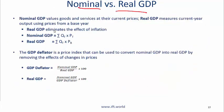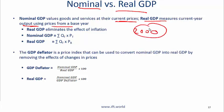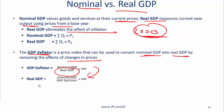Nominal versus real GDP: Nominal GDP values goods and services at their current prices. Real GDP measures current year output using prices from a base year — so if the base year is 2000, real GDP is based on 2000 prices — eliminating the effect of inflation. The GDP deflator is a price index used to convert nominal GDP into real GDP by removing the effects of price changes. The GDP deflator equals nominal GDP divided by real GDP multiplied by 100, and real GDP equals nominal GDP divided by the deflator multiplied by 100.